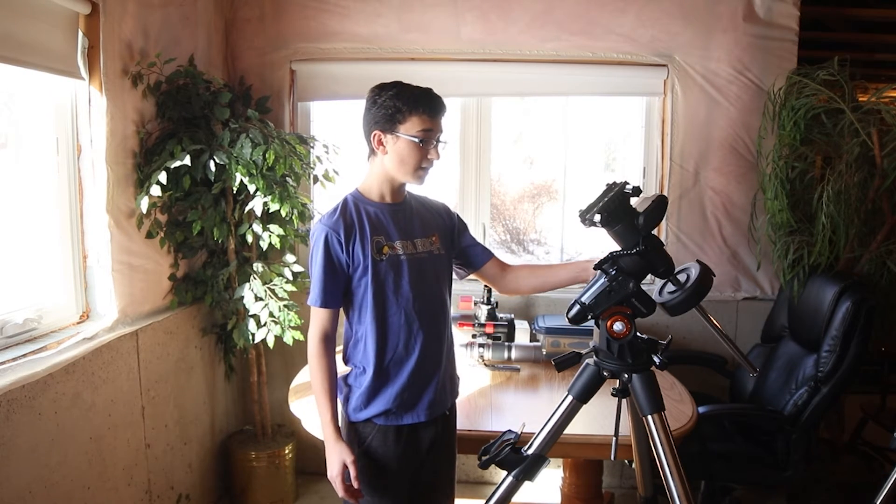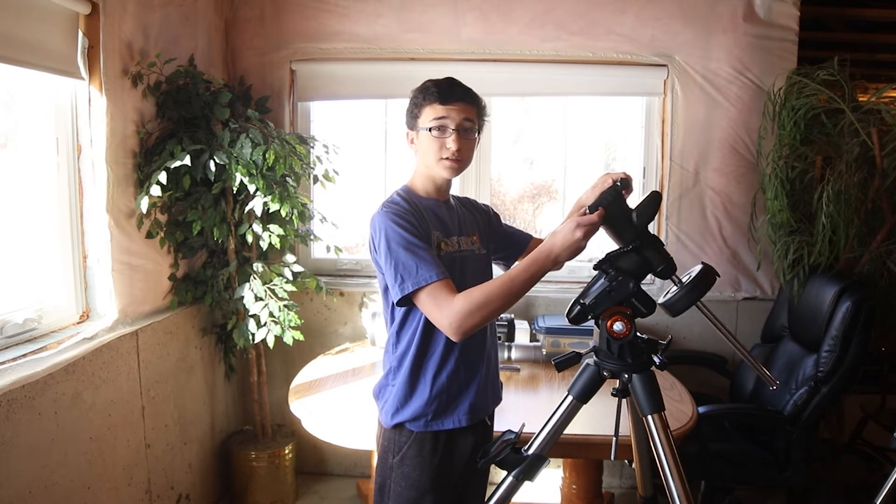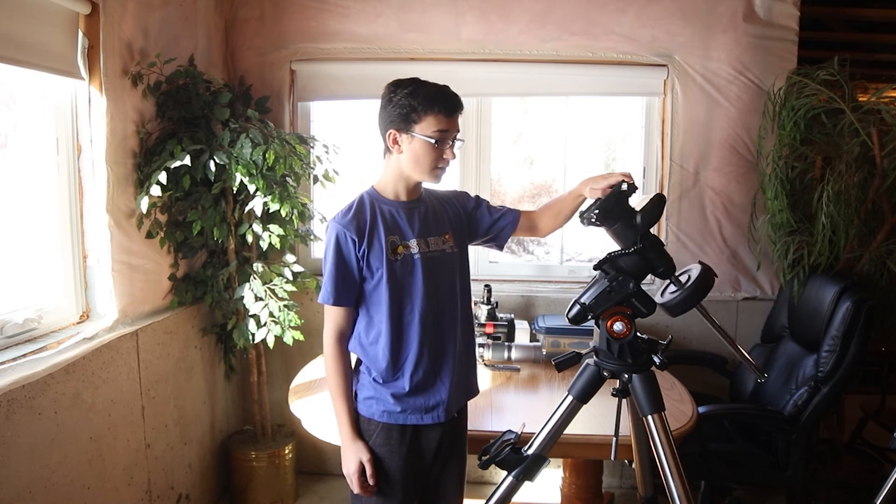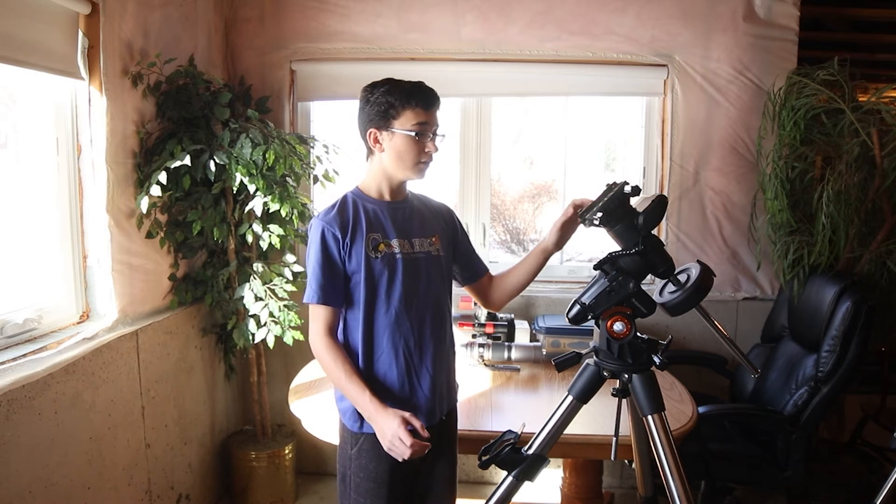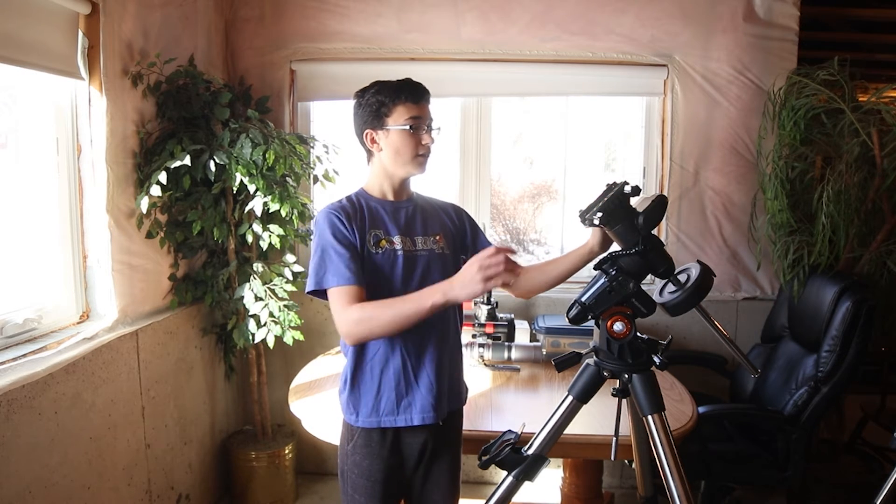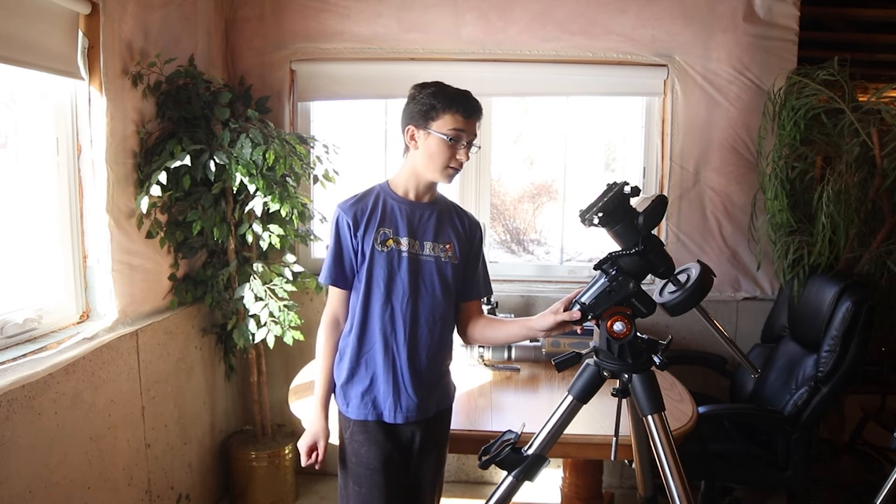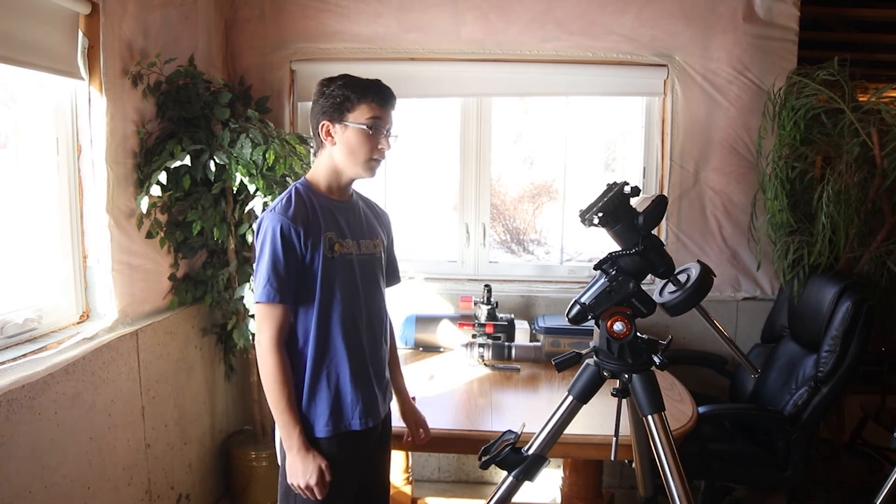This equatorial mount works by you pointing it at Polaris North Star. Then you have this axis right here, the RA axis, and this entire thing rotates along this axis. That's the same rotation that we see in the sky. Then this axis right here is the declination. This is where you put your telescope and then this axis turns like this. Both these functions are used together to point to any object in the sky.